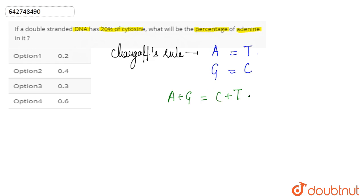Now we are given that the double stranded DNA has 20 percent cytosine. Since cytosine is equal to 20 percent, hence the guanine will also be equal to 20 percent because G and C are equal. So guanine is also 20 percent.